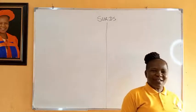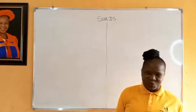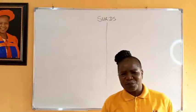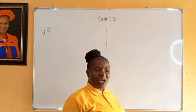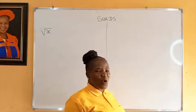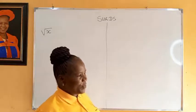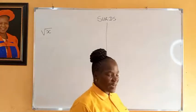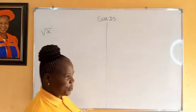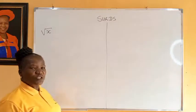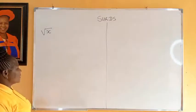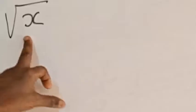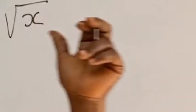Today, I want to discuss surds. What are surds? They are irrational numbers — spirits of numbers that cannot be simplified into a whole number or a rational number, that is, a quotient of two integers. A surd exists if x is not a perfect square.